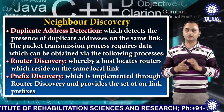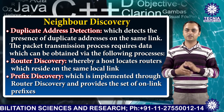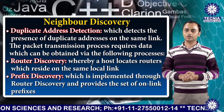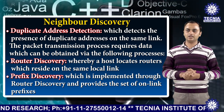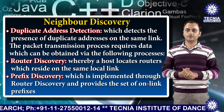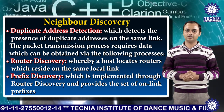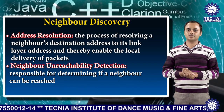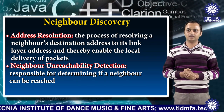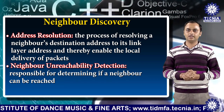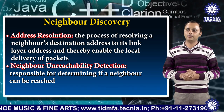First is router discovery, whereby a host locates routers which reside on some local links. Second is prefix discovery, which is implemented through router discovery and provides the set of on-link prefixes. Third is address resolution, the process of resolving a NIWA's destination address to its link layer address, enabling local delivery of packets.